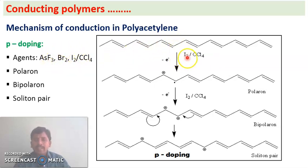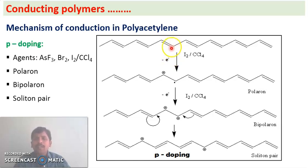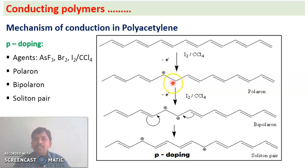When polyacetylene is treated with iodine and CCl4, in the first step one electron is removed from a pi bond of polyacetylene by the iodine/CCl4. This forms a radical cation — there is a radical on one carbon and a positive charge on another — and this radical cation is called a polaron.